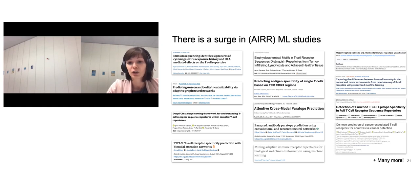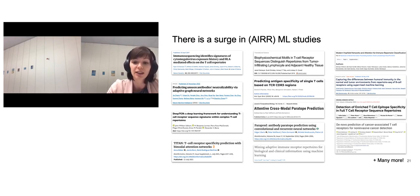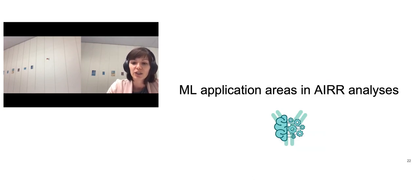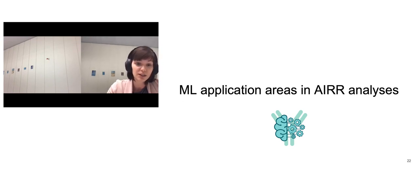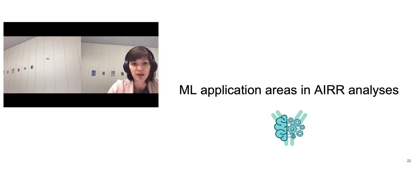There are many studies that employ machine learning for different types of analysis on AIR data, and only a very small subset of them are shown here. The next part we want to discuss is where exactly we apply machine learning in AIR. This is not an exhaustive list of either application areas or papers, but is aimed to provide an overview of what is happening in this field.